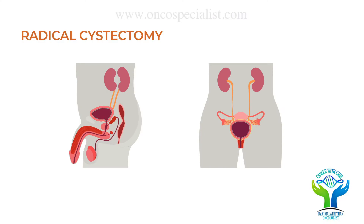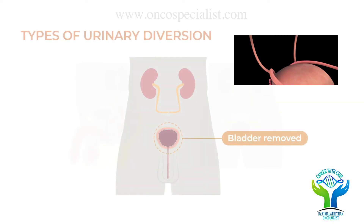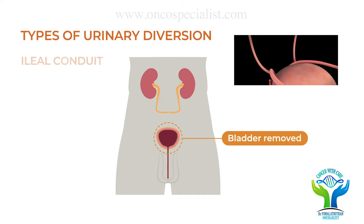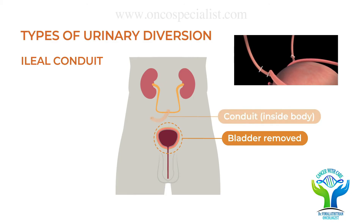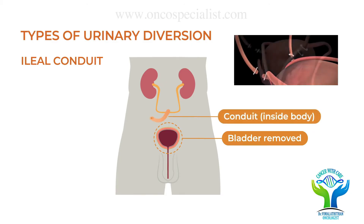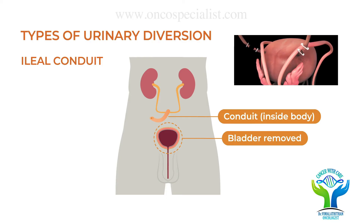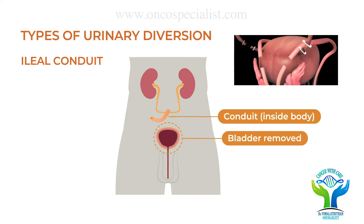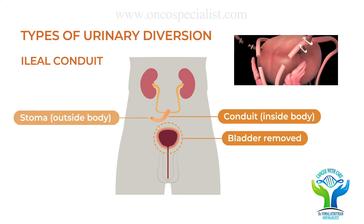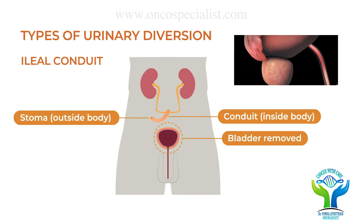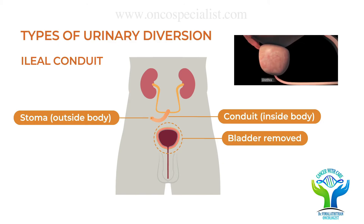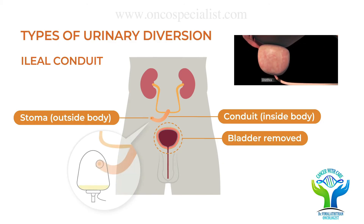What is meant by ileal conduit? Once the bladder is removed, surgeons create a small portion of bowel through which the ureter is connected to one end, and the other end of the bowel is brought to the skin of the abdomen — that is called a stoma. A plastic appliance can be connected over the stoma to collect the urine.